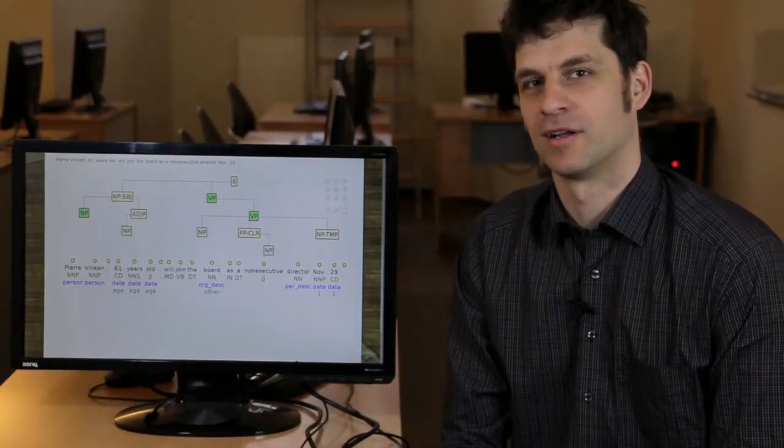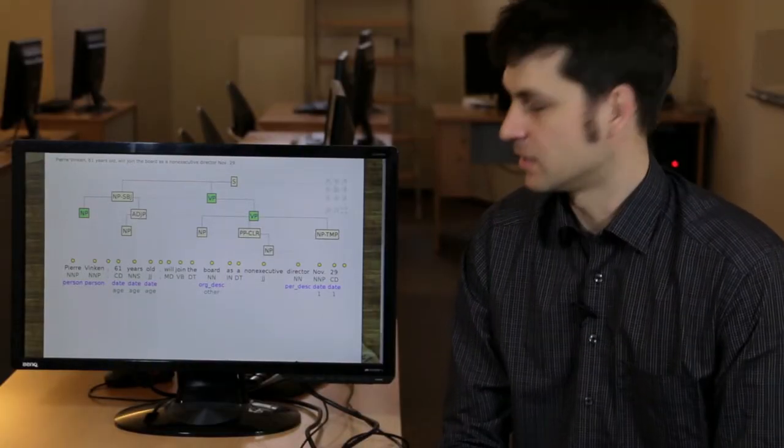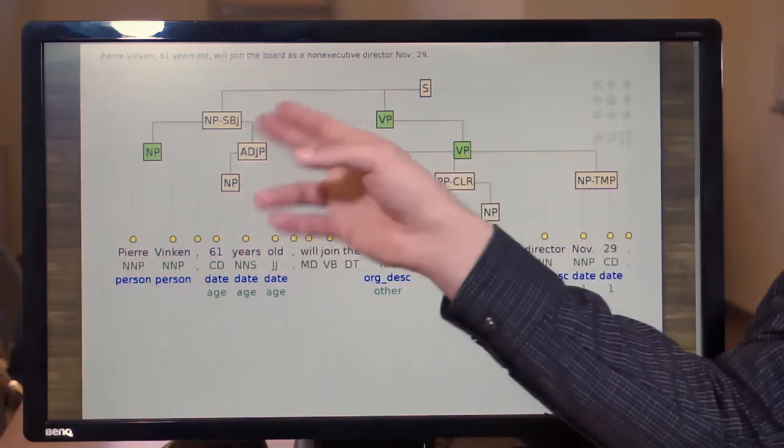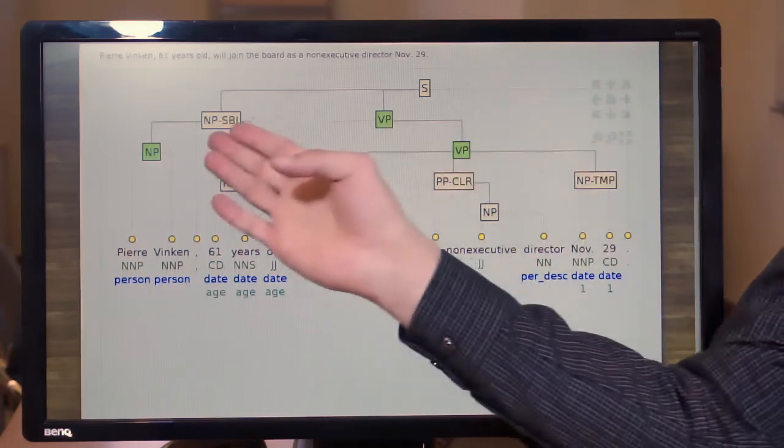These days, people hardly write these grammars manually. Instead, they annotate many sentences with trees and simply read off which productions were necessary to create them. So for example, this sentence from the Wall Street Journal section of the Penn Treebank contributes one more observation to the production of S going into NP and VP.